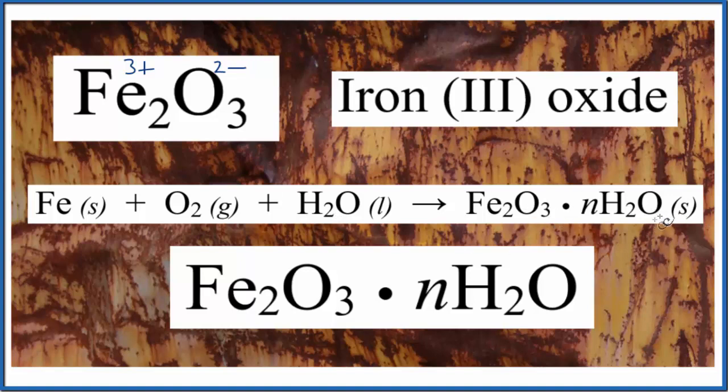To answer our question, the formula for rust is Fe2O3. You could write it Fe2O3 dot nH2O as well to show that it's hydrated. This is Dr. B, thanks for watching.